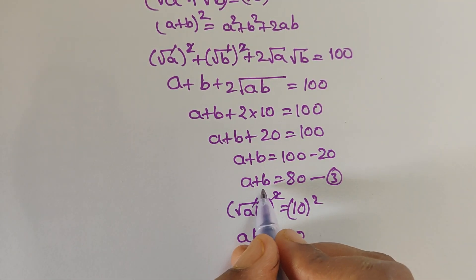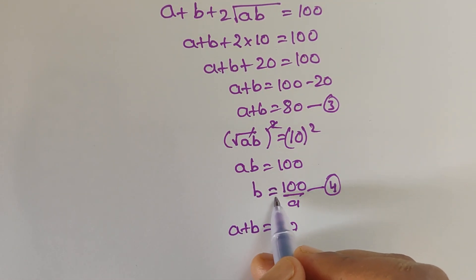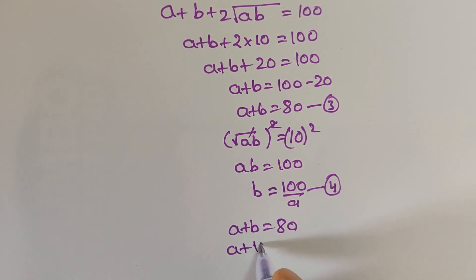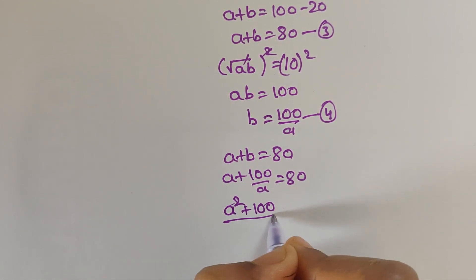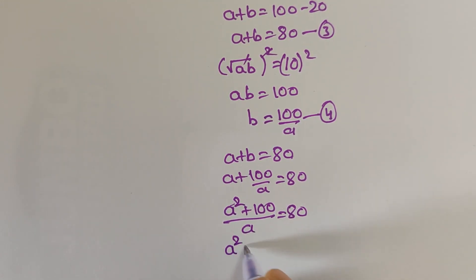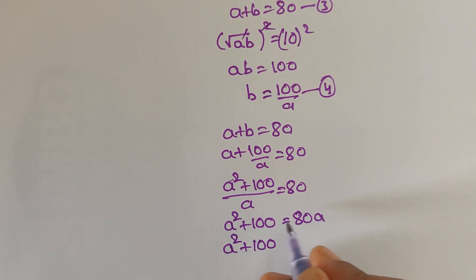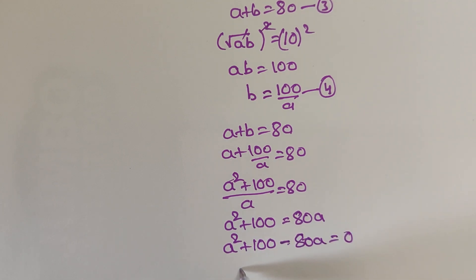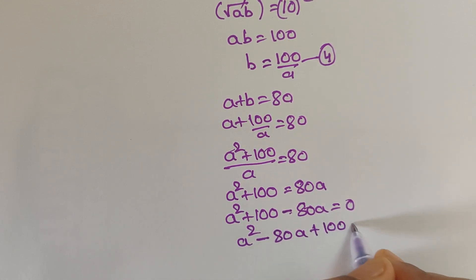Now we take equation 3: a plus b equals 80. Substitute the value of b from equation 4: a plus 100 over a equals 80. Taking LCM: a squared plus 100 divided by a equals 80. So a squared plus 100 equals 80a. Moving the term to the left side: a squared minus 80a plus 100 equals 0.